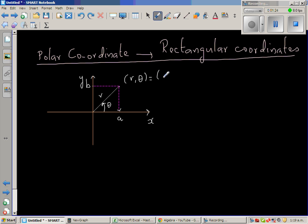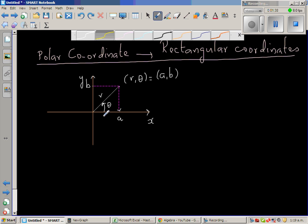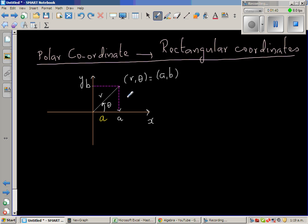So this, in Cartesian form or rectangular form, it is (a, b). So can we find a relation between a, b, and r, θ? So you can say, we can say that this is a, this distance is a, and this is b. And this is again a right-angled triangle. So what can we say?